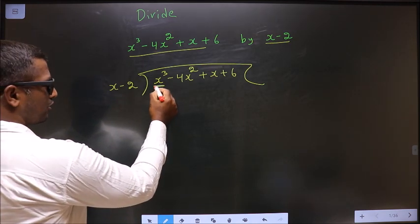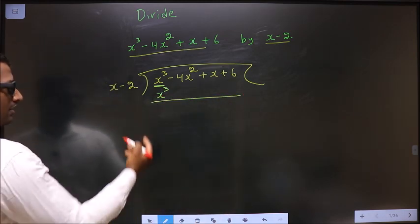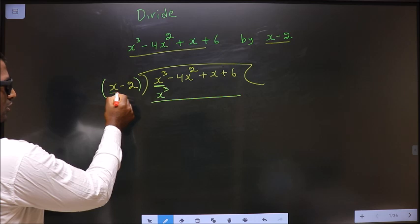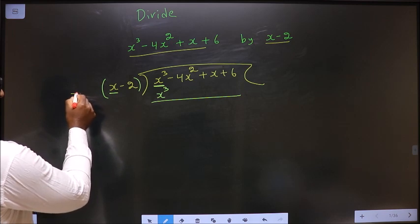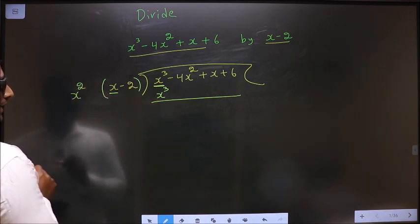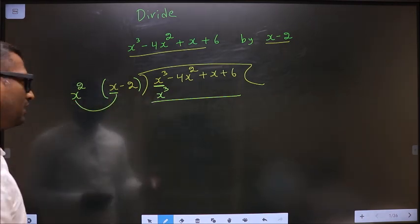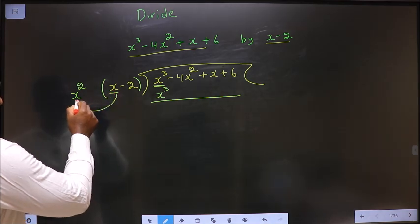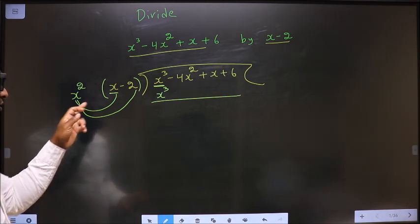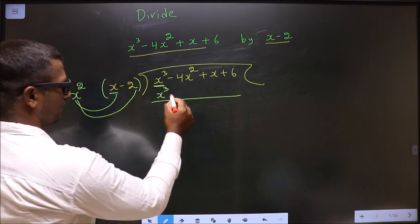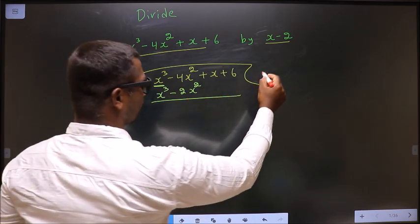Here you have x cube. Under this also you should get x cube. Now to get x cube here, this should be multiplied with what? Here you have x, so this should be multiplied with x square — then only you get x cube. So x square into x gives you x cube. When you are multiplying to this, you should also multiply to the other term, that is minus 2. So x square into minus 2 will be minus 2x square. Now this is your first term of the quotient.